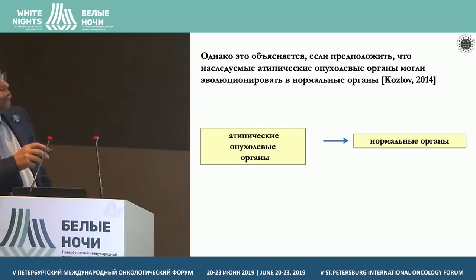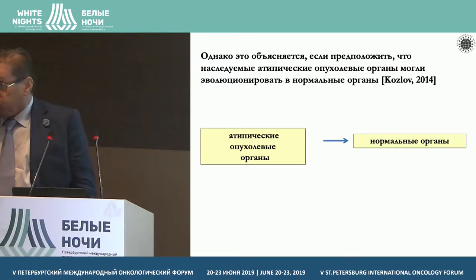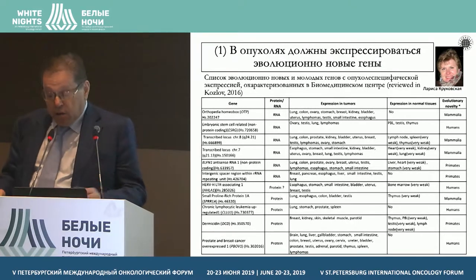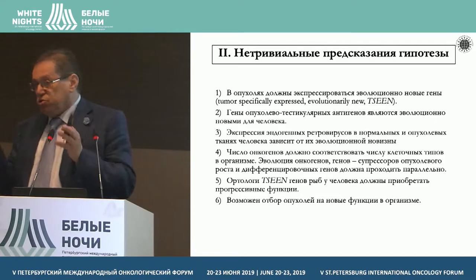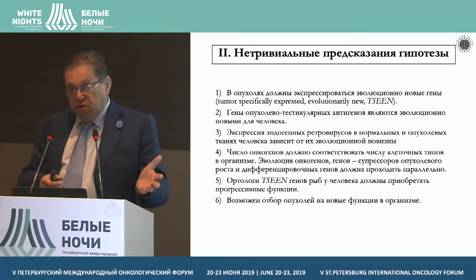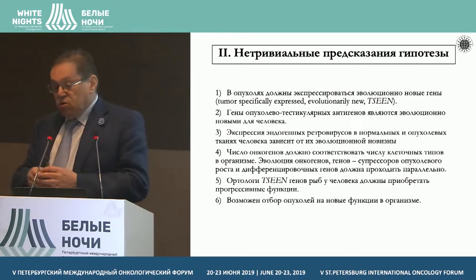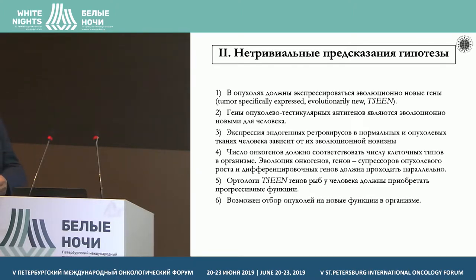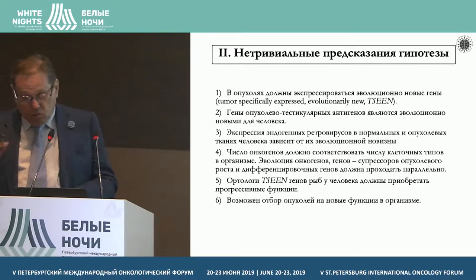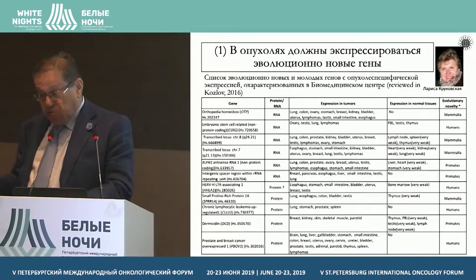We think that atypical tumor organs may turn into normal organs in the process of evolution. That's our hypothesis in brief. All hypotheses and theories are characterized by two requirements: they must provide non-trivial predictions and non-trivial explanations. We have a whole series of non-trivial predictions. Tumors have to express evolutionarily new genes, and the genes of tumor-testicular antigens are evolutionarily new for human beings.